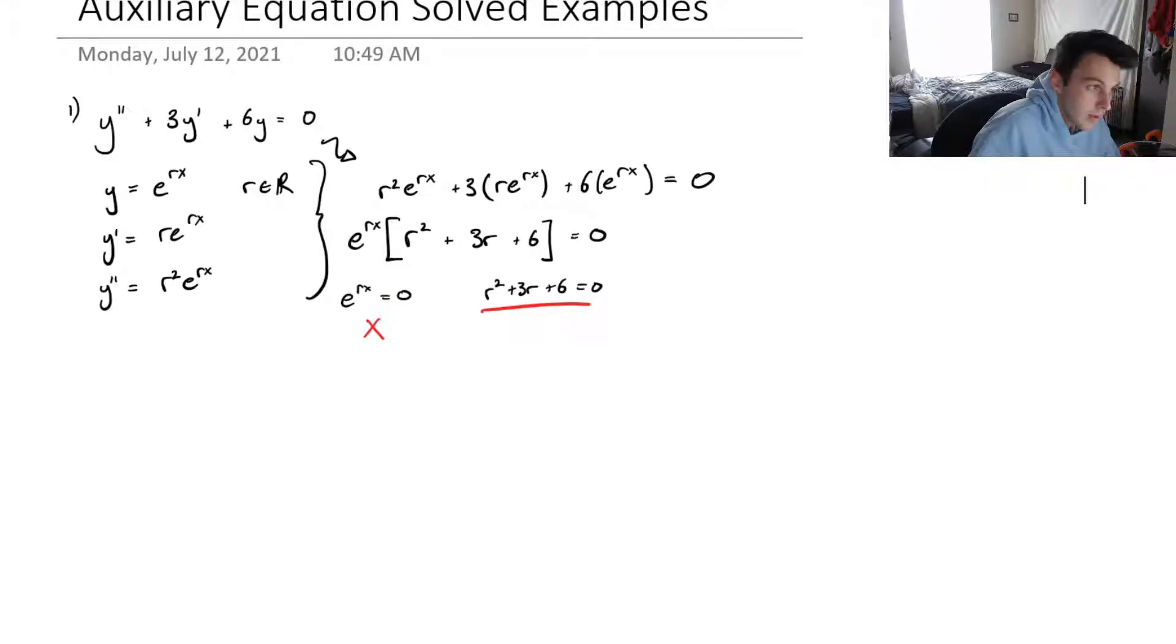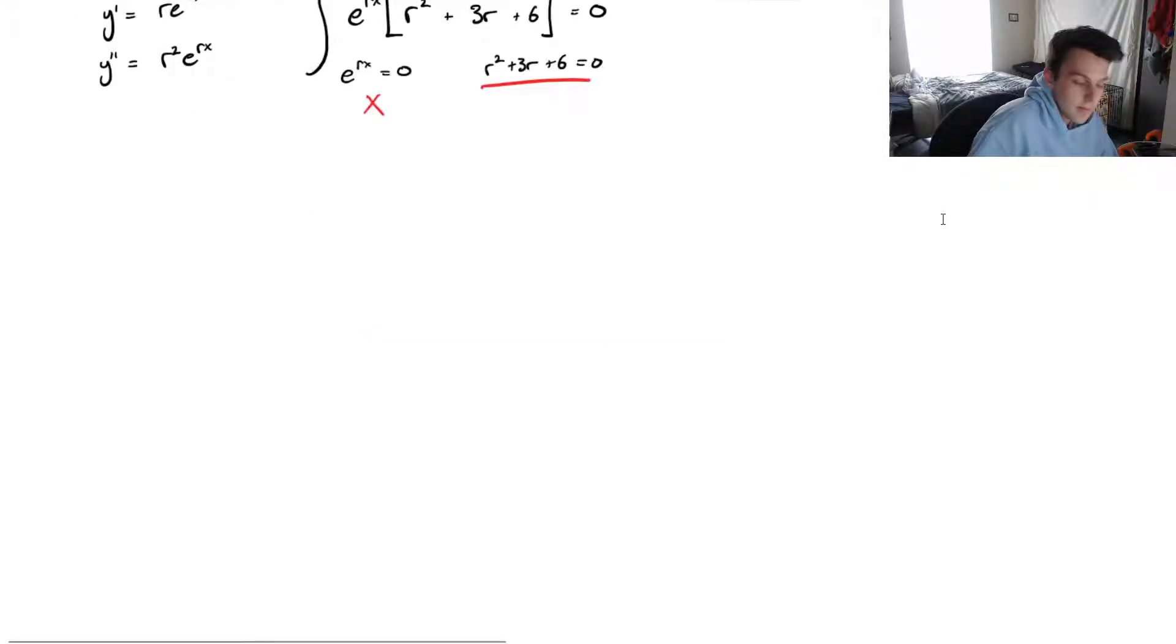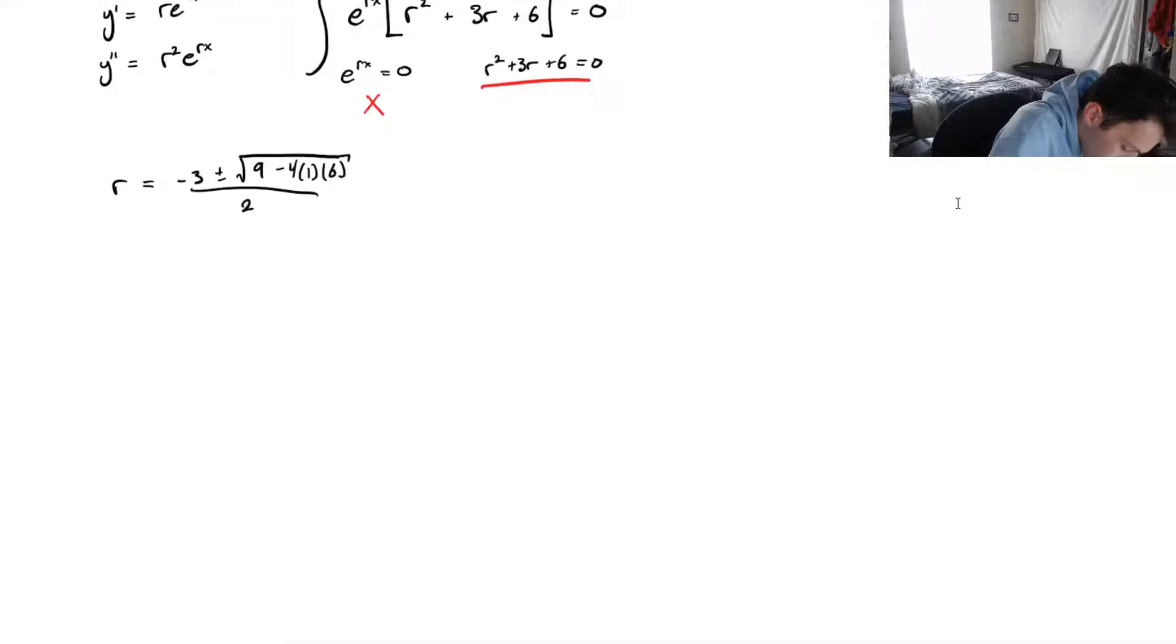We find no solutions from e to the rx equals zero. So we are going to solve this quadratic. So we have r must be equal to negative 3 plus or minus square root of 9 minus 4 times 6, all over 2. So we get r equals, and you can probably already see this, that we are definitely going to get some complex roots underneath our square root here.